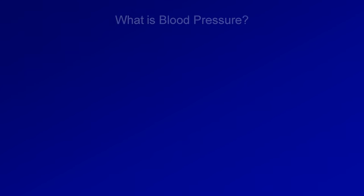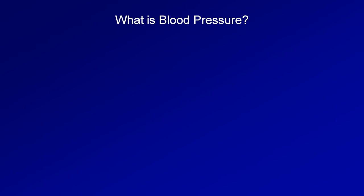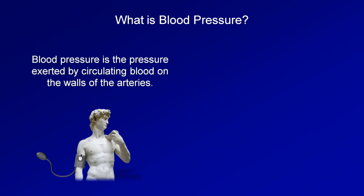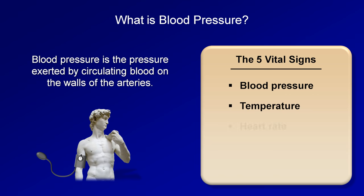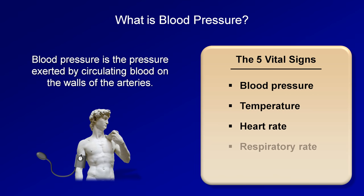So first, what is blood pressure? Blood pressure is simply the pressure exerted by circulating blood on the walls of the arteries. It is one of the most important physiological parameters of the body, which is why it's included in the five vital signs, along with temperature, heart rate, respiratory rate, and oxygen saturation.